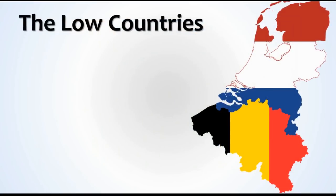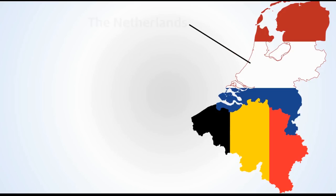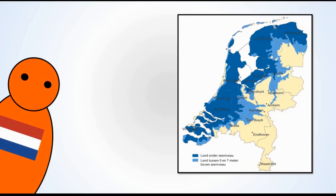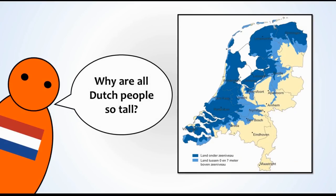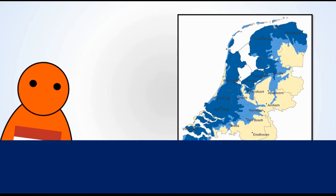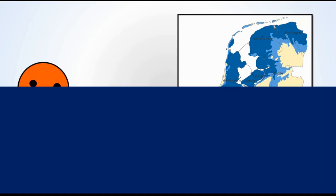Now let's have a look at the term the Low Countries. In Dutch they are the Lagerlande, which means exactly the same thing. Which countries make up the Low Countries? Well, generally what's meant by the Low Countries is the Netherlands, which I've just covered, and Belgium, which is the country directly to the south of the Netherlands. Why are they called the Low Countries? Because as you can see on this map, a lot of the Netherlands is below sea level, and historically the Dutch had to reclaim a lot of land from the water.